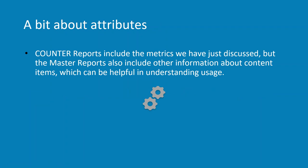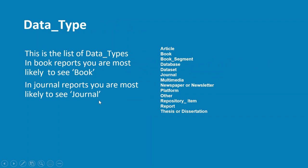I don't want to make this overly complicated, but I do want to mention attributes, because this is useful information that you will find in the Counter Release 5 master reports and it really helps understand the use of the content. One of the attributes is called data type, and I've put a list on this slide of all the different data types. In book reports you are most likely to see 'book' as the data type, and in journal reports you are most likely to see 'journal'.